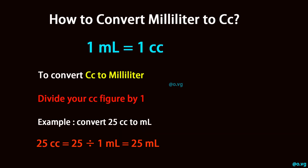To convert CC to milliliter, divide your CC figure by 1. For example, convert 25 CC to milliliters: 25 cubic centimeters equals 25 divided by 1 milliliter, which equals 25 milliliters.